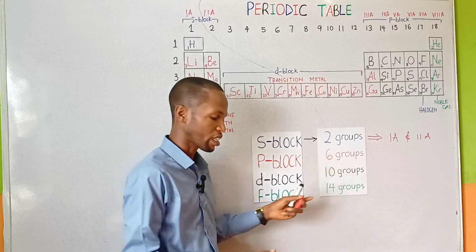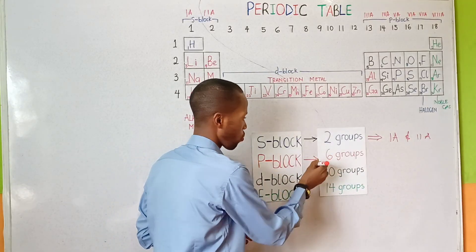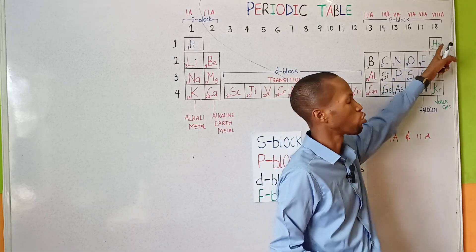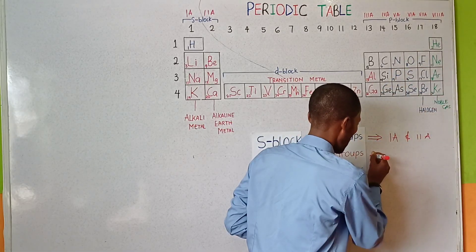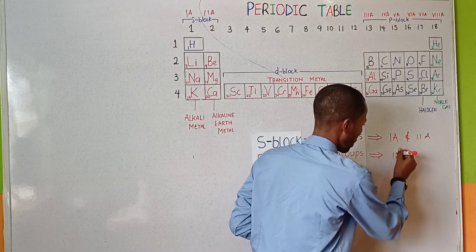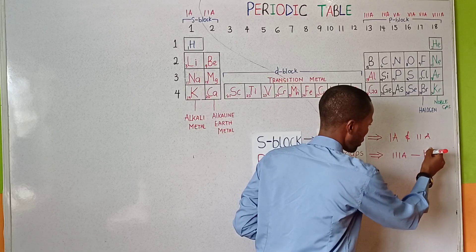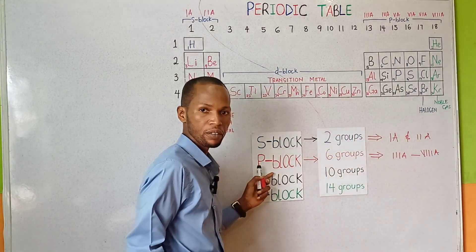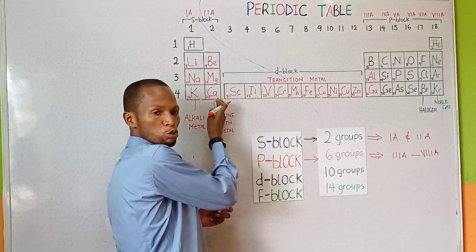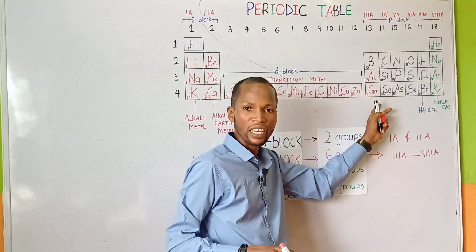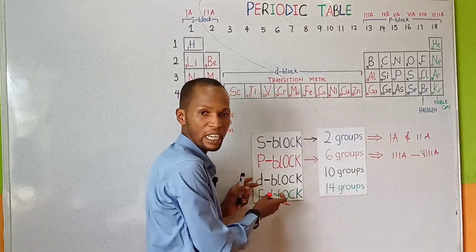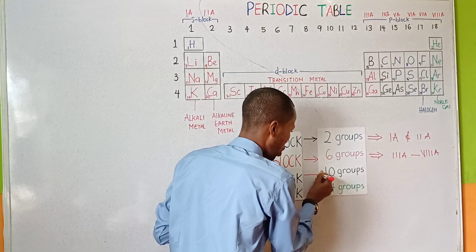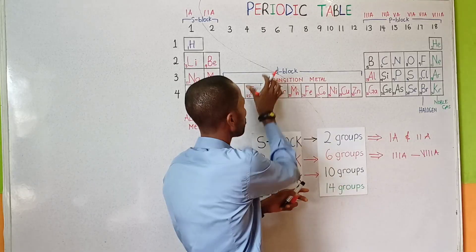The P block contains six groups, group 3A to group 8A. In between group 2A and 3A, we have the transition metals, which is found in the D block. So the D block contains 10 groups.